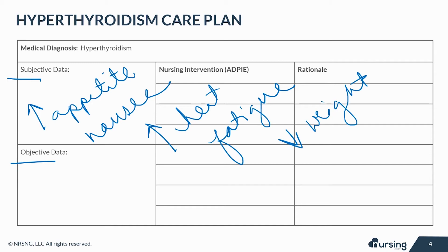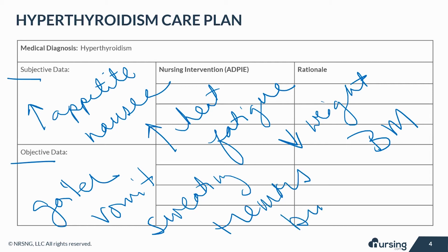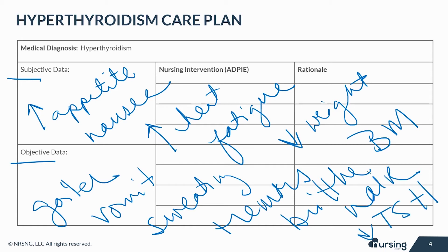Subjective data also includes sudden weight loss and more frequent bowel movements. Objective or measurable data may include an enlarged thyroid gland or goiter, tachycardia, vomiting, diarrhea, sweating, tremors, thinning skin, fine or brittle hair, and a low TSH level with elevated free T4 level.